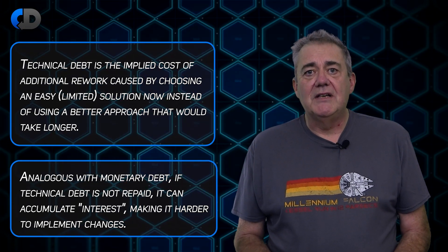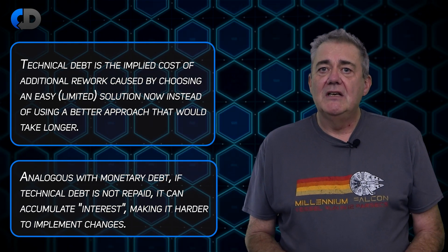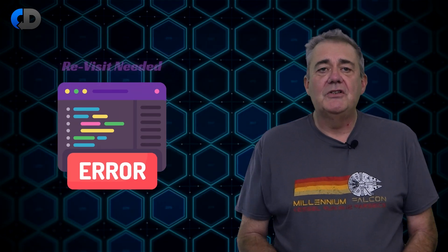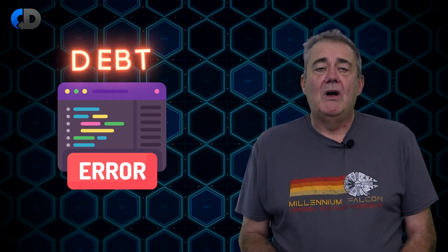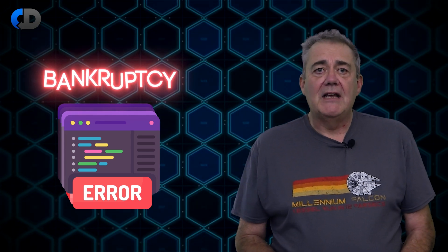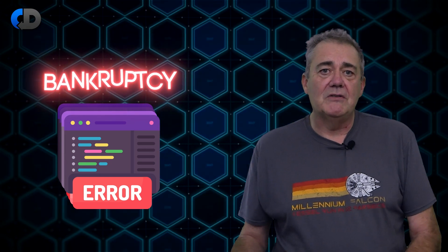These days the idea of technical debt is pretty widely accepted. When it was introduced in the early 1990s it was probably a bit more controversial. The analogy likens ideas in finance to those in software. If we write bad code that requires us to revisit it later because of its low quality, that's a debt we will either repay or that will grow over time until we're bankrupt — unable to repay our debt and keep going. The bankruptcy equivalency in software takes the form of a codebase so difficult to change that change grinds to a halt.